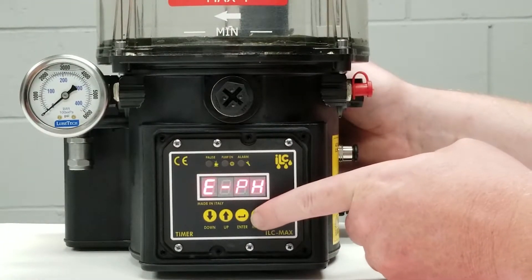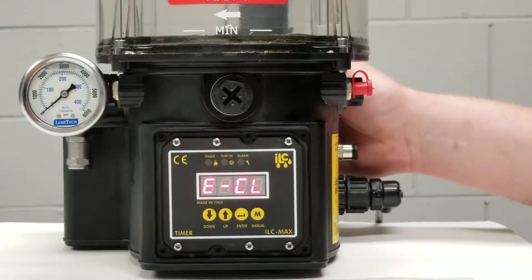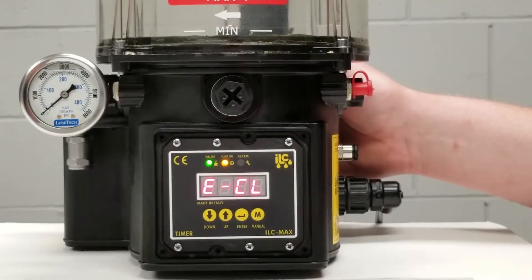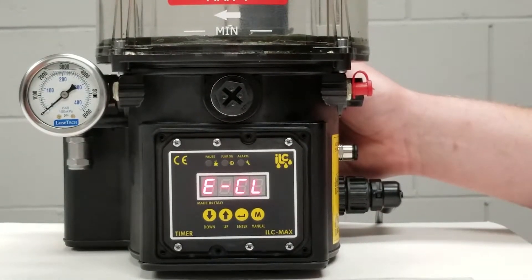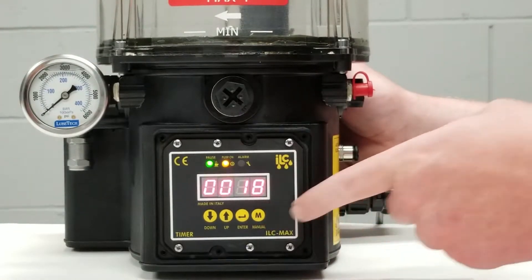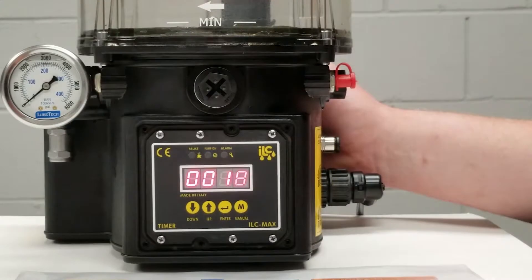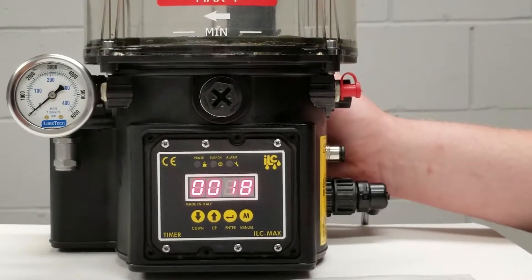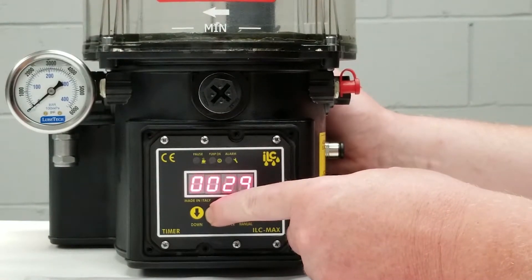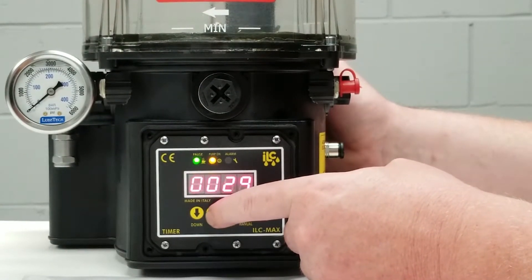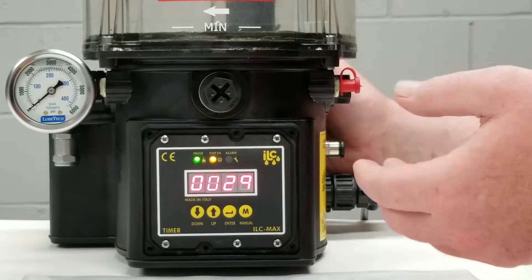We'll go back to our programming menu and this particular pump is set up to pump and rotation count. E-CL will tell me how many rotations this pump is set for. Again we're going to press our M button to enter that parameter and see what the setting is. So this particular pump is programmed for 18 rotation counts. The higher the rotation count, the more lubricant it will deliver. The lower the rotation count, the less lubricant it will deliver.